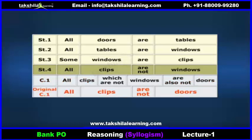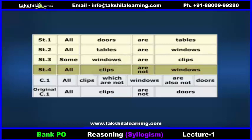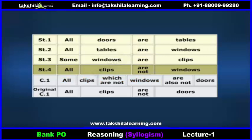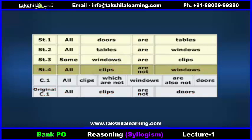But why have we considered 'all clips are not windows' as another statement and not as a conclusion? See Vidya, read the conclusion carefully — 'all clips which are not windows.' It clearly states that this is definite. That's why we consider it as another statement and check only the conclusion formed by the subject and second predicate.